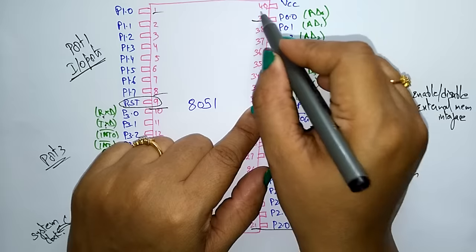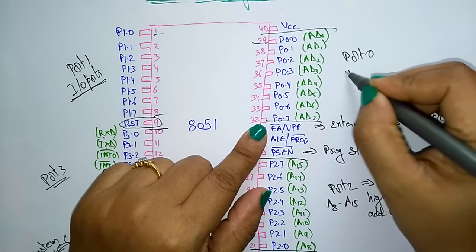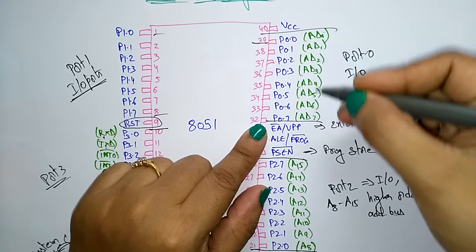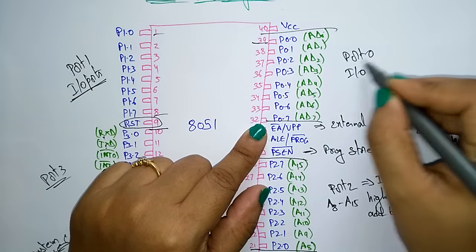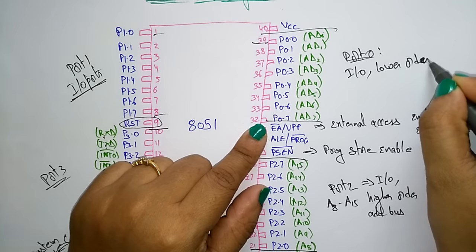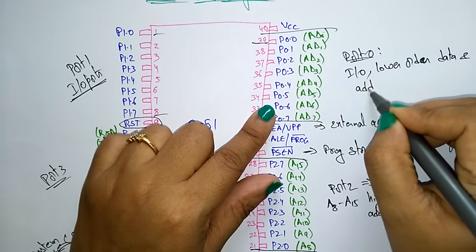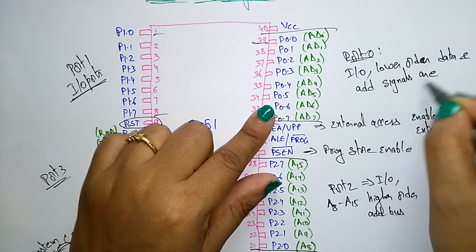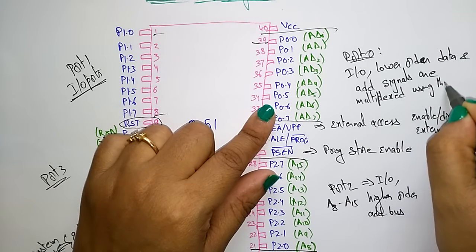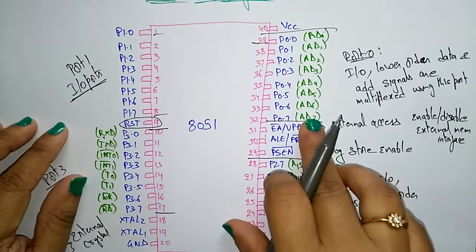Pins 32 to 39 form port 0. This port serves as an input/output port. The lower-order address signals A0 to A7 and data signals D0 to D7 are multiplexed on this port — both address and data are combined and carried through port 0. So port 0 serves as I/O port and as a multiplexed lower-order address and data bus.